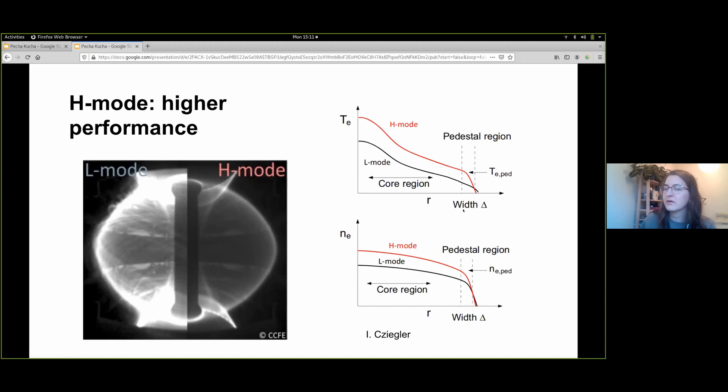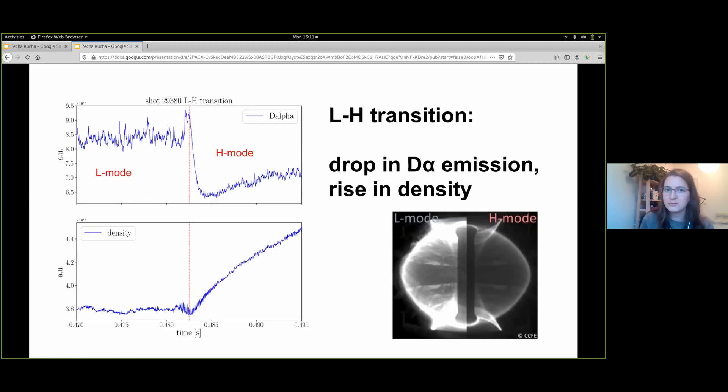In H-mode, the plasma edge builds up a pedestal so the core pressure is much higher than during L-mode. Higher pressure results in higher fusion power, bringing us closer to our goal.